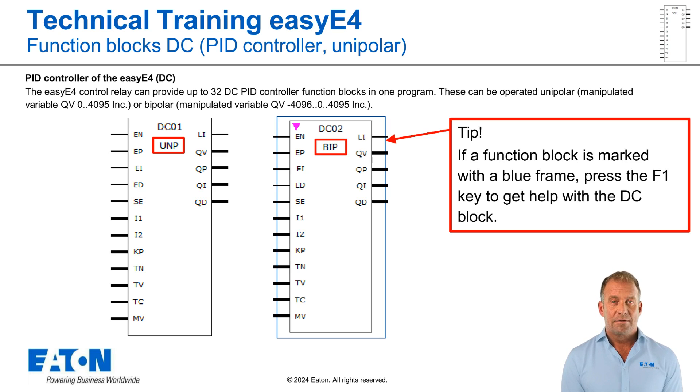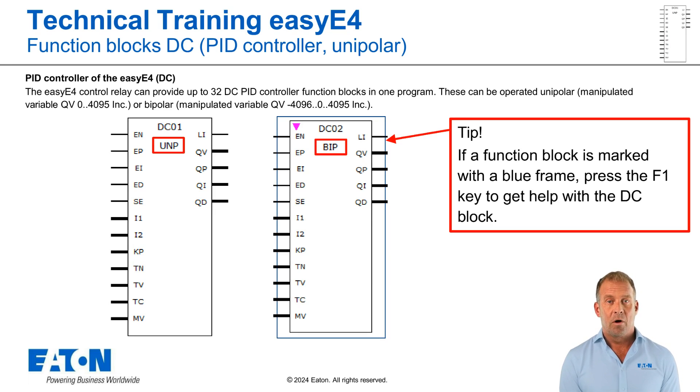A tip: select a function block in EZSoft with a single click and then press the F1 key to open the corresponding section for the block in Help.